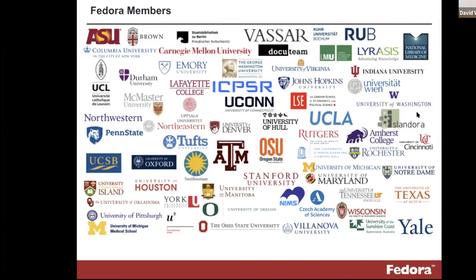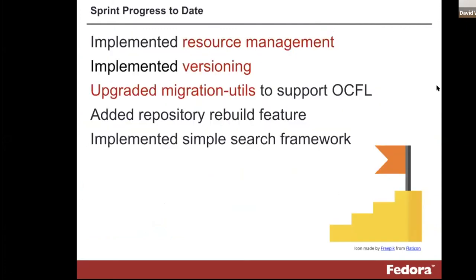Thank you to any of the institutions currently supporting us. We're basically in an alpha state — we haven't cut an alpha release yet, but that is more or less where we are. All of the basic features are in place in terms of resource management, versioning, an upgraded migration utility, the ability to rebuild the repository, and a new integrated search feature. You can now directly query content in Fedora synchronously without having to hook up an external Solr index, which is quite useful for development.